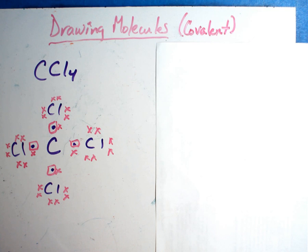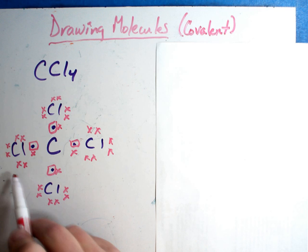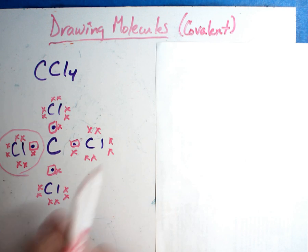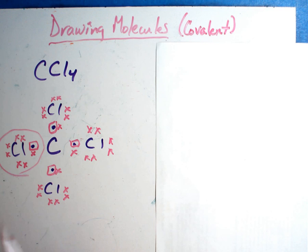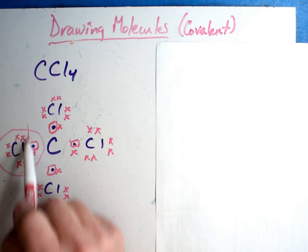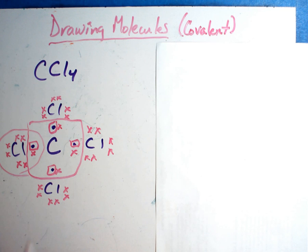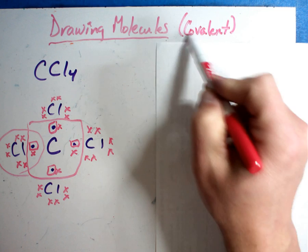They're plugging into one another just like we saw in the other video. Does carbon fulfill the octet rule - is it full? Two, four, six, eight. Remember, that shared dot counts for both. That means each chlorine is full, and carbon is full too - two, four, six, eight. Everybody's full by sharing. There are no charges at all. These bonds are what are called covalent.